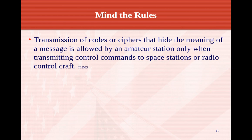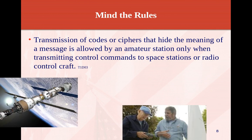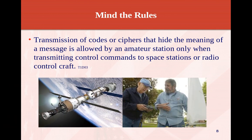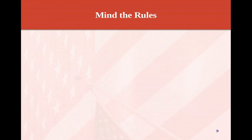Transmission of codes or ciphers that hide the meaning of a message is allowed by amateur stations only when transmitting control commands to a space station or radio-controlled craft. That is the only time encryption is permitted — when you're controlling a space station, a satellite, or a remote control craft. Any other time, it is not allowed.